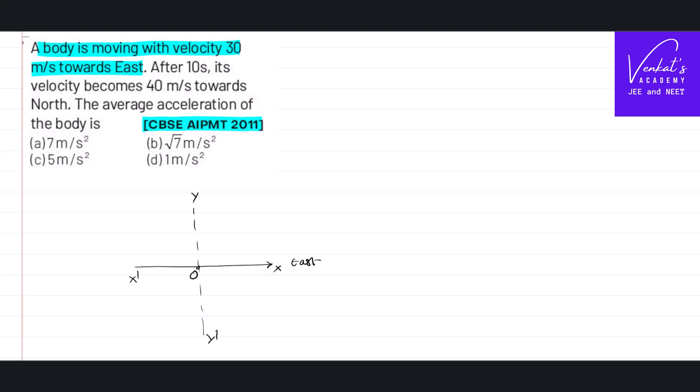Positive y-axis as North, negative y-axis as South is a standard representation, even in the map. So what is given for this problem is it is moving 30 meters per second towards East.